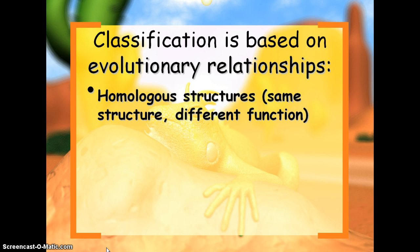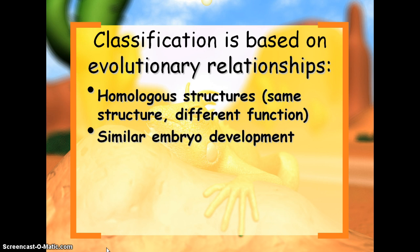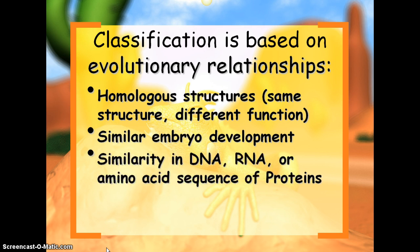One way we can classify organisms is through homologous structures, which have the same structure but different function. Similar embryo development and similarities in DNA, RNA, or proteins — these were all from our evolution section as well as evidences of evolution.